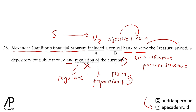Pada awalnya, parallel structure ini sebenarnya memiliki preposition to di semua kata kerja tersebut: to serve, to provide, dan to regulate. Namun dalam aturannya, apabila kita memakai preposition di awal, maka preposition yang lainnya dalam parallel structure bisa dihilangkan, cukup diwakili dengan satu preposition yang muncul di awal. Dalam hal ini preposition to. Oleh karena itu, jawabannya adalah regulate, dan of dalam regulation of juga dihilangkan. Jawabannya hanyalah regulate.